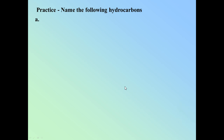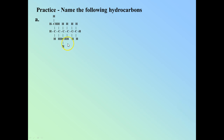Here's some practice. See if you can name the first one — pause and try it. So what we have is seven carbons in a row. The end carbon is actually part of the main chain — that's something a lot of people miss. So there are seven carbons making heptane, and then a one-carbon methyl group. Counting both ways it lands on four, so this is 4-methylheptane.